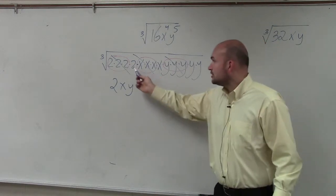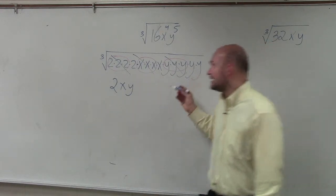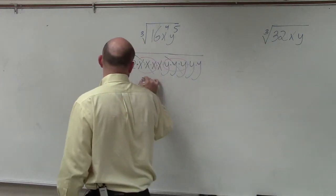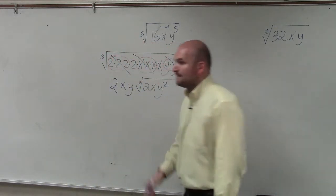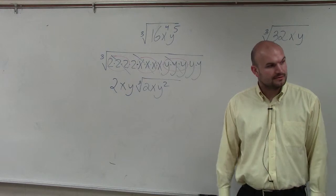Now what's left over? A 2, an x, and two y's. So I write cube root of 2xy squared. And that's my final answer.